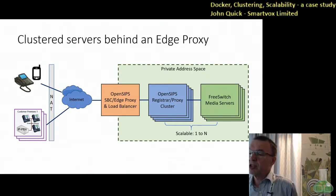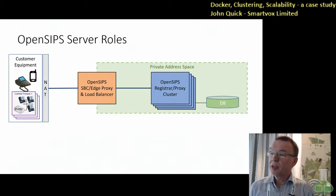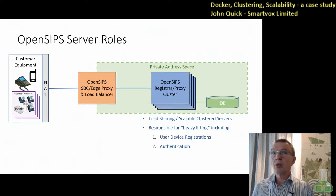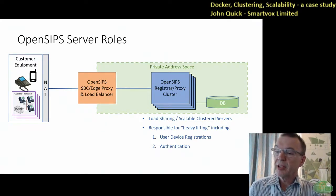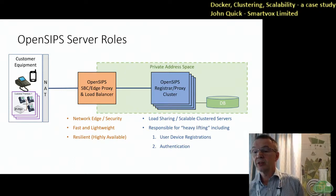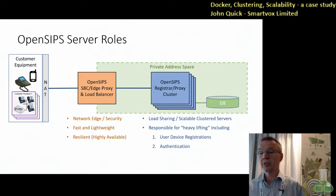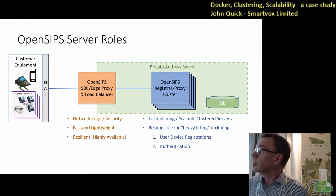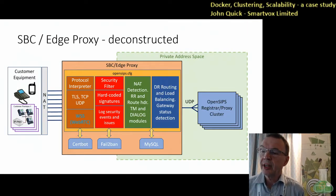Replication of registrations would be supported by the new cluster module. The idea was to push all of the slower, potentially blocking actions into the blue servers — the registrar proxies. So any kind of IO, database updates, user device registrations, and authentication would all be handled in the cluster. The network edge server would have to be really fast and lightweight. It would do security and interface between the public and private networks. But because of its status as a single server, it really needed to be part of some kind of highly available solution.